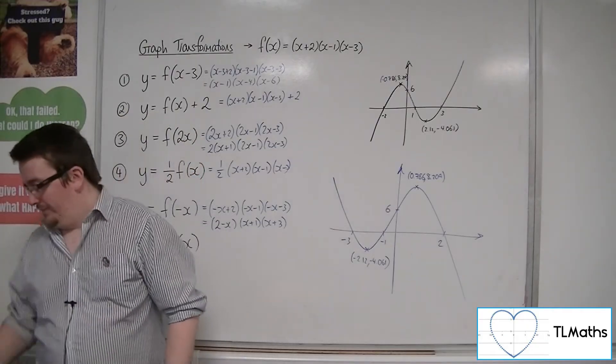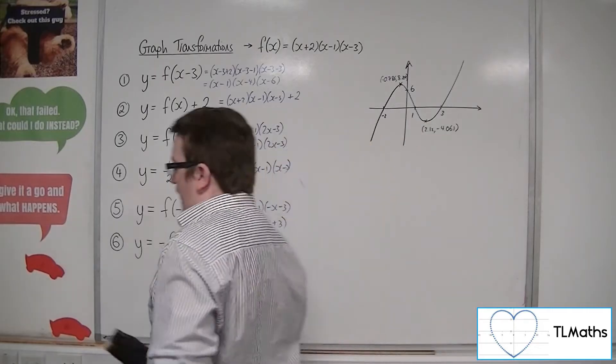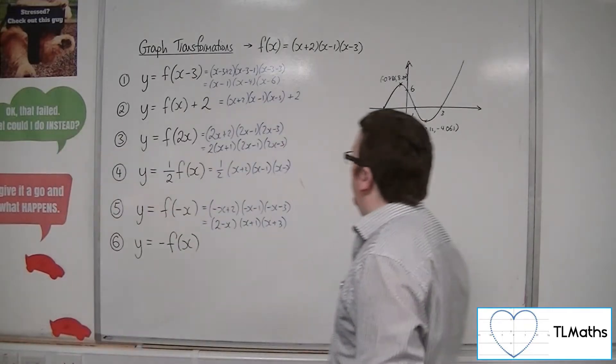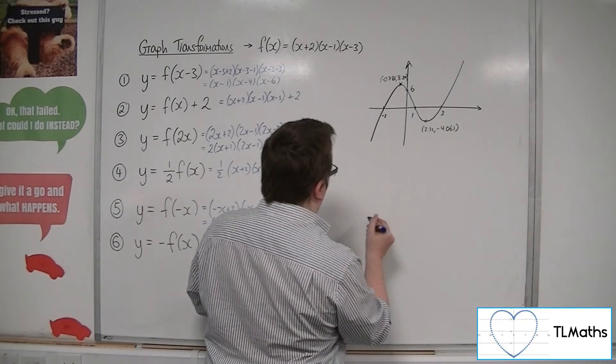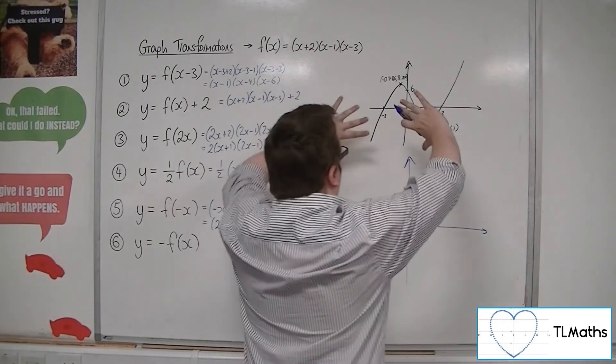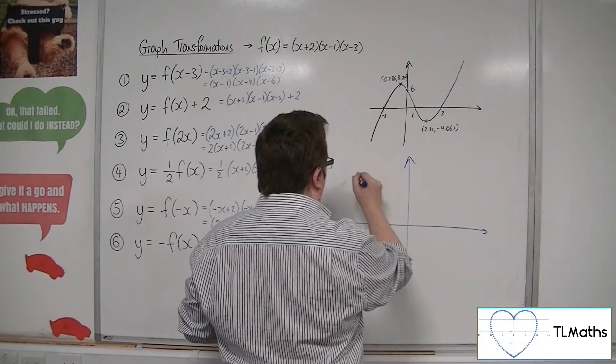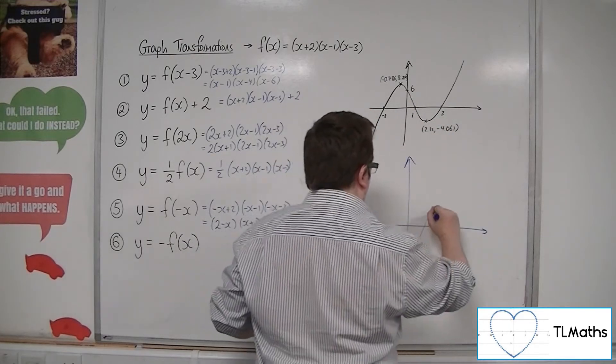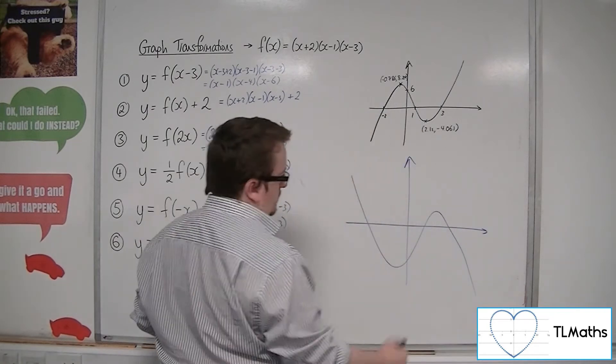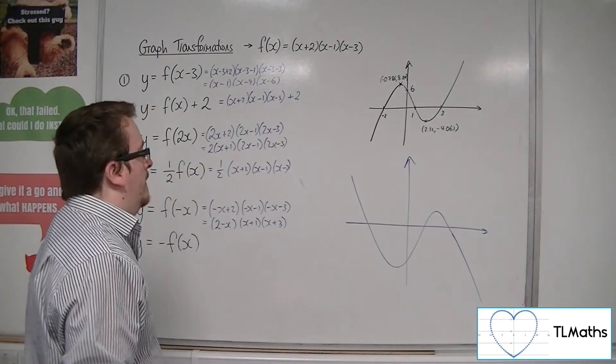So, last but not least, we have -f(x). So, a reflection in the x-axis this time. So, this is all getting flipped up. So, it will look something like this. We've got 1, 3, -2, -6.